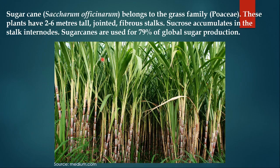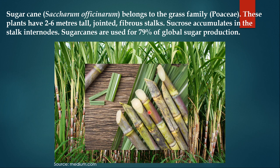Sugarcane is one of the most important crops worldwide. The scientific name of sugarcane is Saccharum officinarum. It belongs to the grass family Gramineae or Poaceae. The plants grow up to 2 to 6 meters and they have jointed fibrous stalks. Sucrose accumulates in the stalk internodes and this sucrose is extracted for sugar production. Sugarcane is used for 79% of global sugar production.